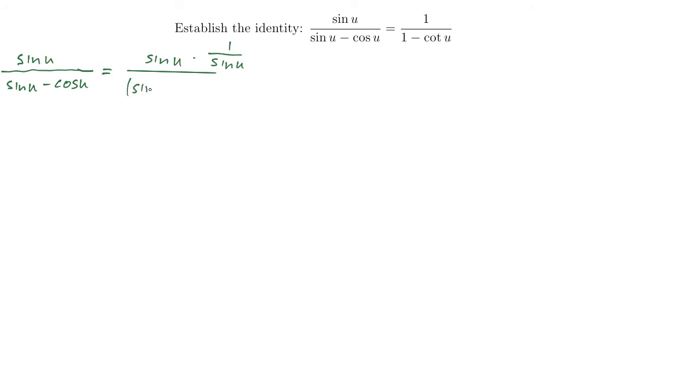And on bottom, I have sine u minus cosine u times, again, 1 over sine u. Okay, so I've not changed the value because I've multiplied top and bottom by the same thing, 1 over sine u. And now look what happens. I have sine u times 1 over sine u. That becomes 1. What about the denominator?